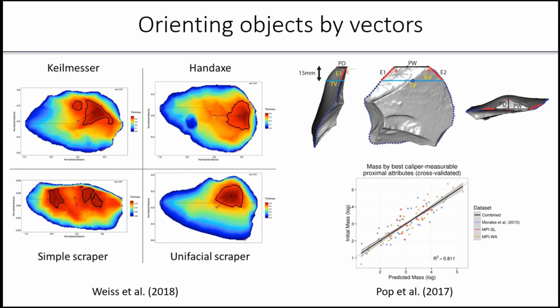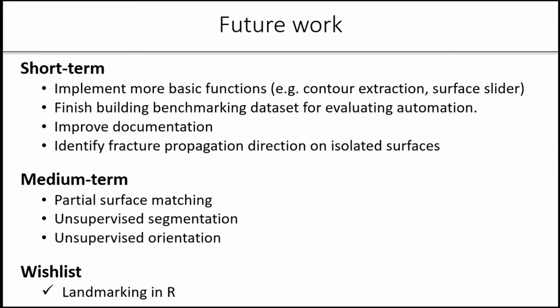I will leave it at that. I'm just going to mention a couple of things about what I expect to do in the short term. I would like to implement more basic functions that allow you to do whatever you think is cool. I want to finish building a benchmark dataset for evaluating automation. I have a large collection of scans which I want to fully analyze with this package and have that as a benchmarking dataset against which I can evaluate things I plan on implementing later. I also need to improve the documentation of some of the functions.